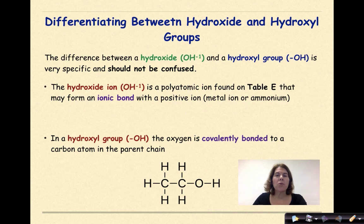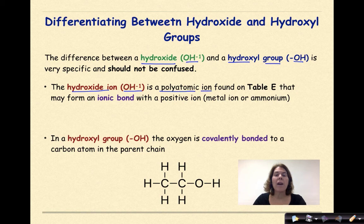Differentiating between hydroxide and hydroxyl groups. The difference between a hydroxide (OH⁻¹) and the hydroxyl group (-OH) is very specific and should not be confused. The hydroxide ion (OH⁻¹) is a polyatomic ion found on table E that may form an ionic bond with a positive ion, such as a metal ion or ammonium.